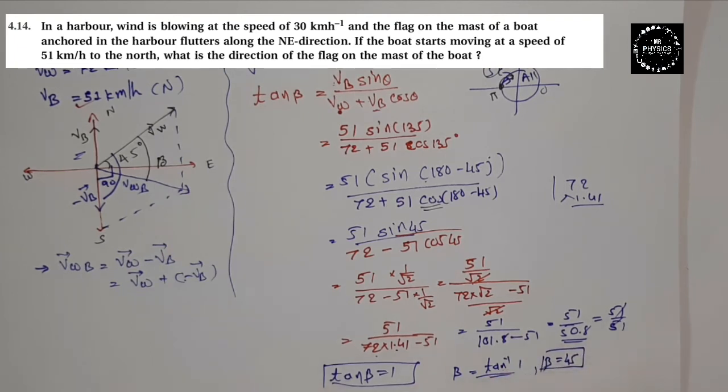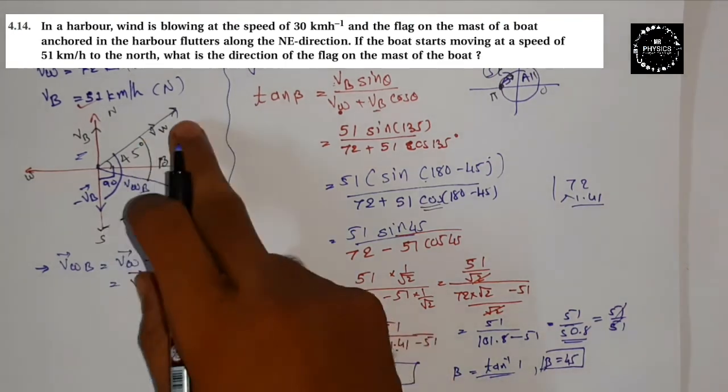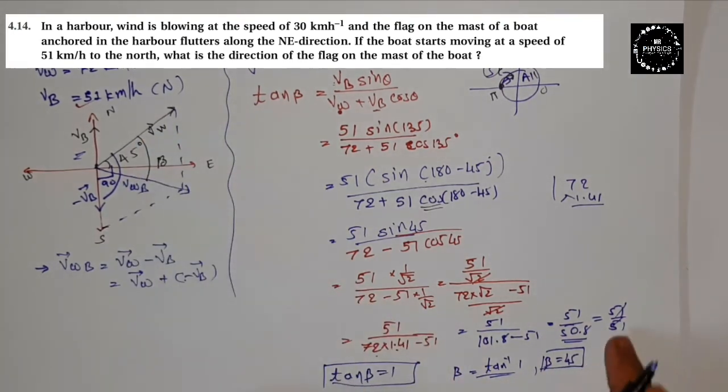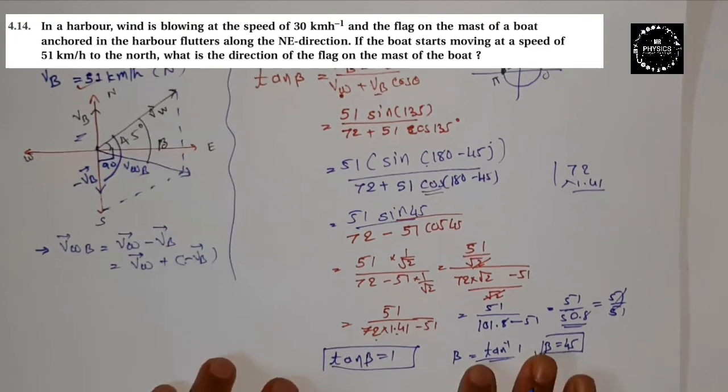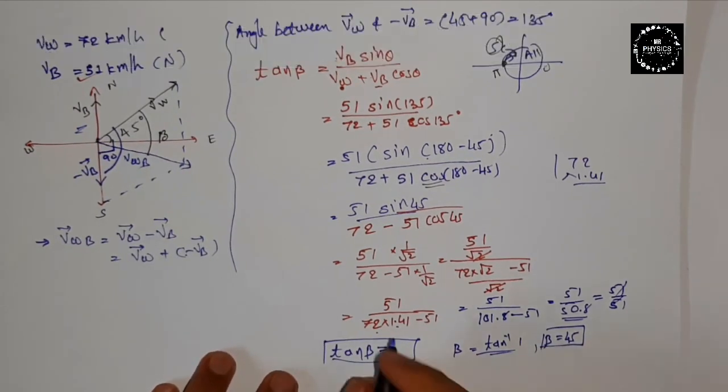Our answer is beta equals 45. So here, the angle with respect to this direction is 45. But if we look properly, it's almost in this direction, in the east direction. So properly it will be 45.1.